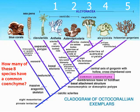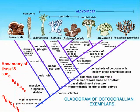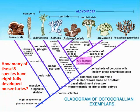One more example: how many of these eight species have eight fully developed mesenteries? You don't need to know what a fully developed mesentery is. Of those eight, those two have eight fully developed mesenteries. You see the appearance of the trait labeled on that branch — everything after the appearance of eight fully developed mesenteries will have that trait, and you can see these two appear after the appearance of that characteristic.